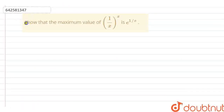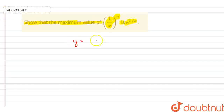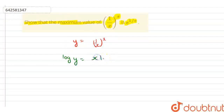The question is: show that the maximum value of (1/x)^x is e^(1/e). So, let's say that our y is equal to (1/x)^x. Now, take log of both sides. So, we have log y is equal to x · log(1/x).